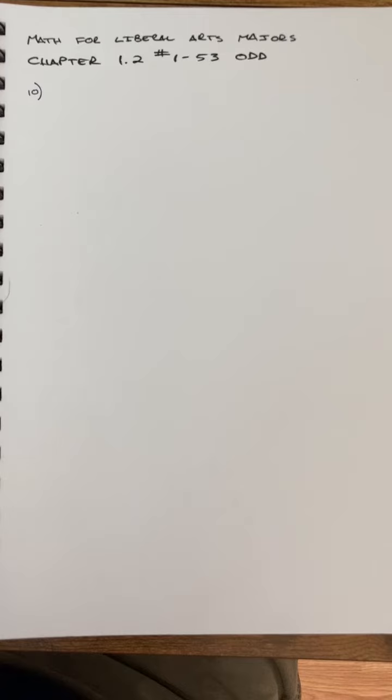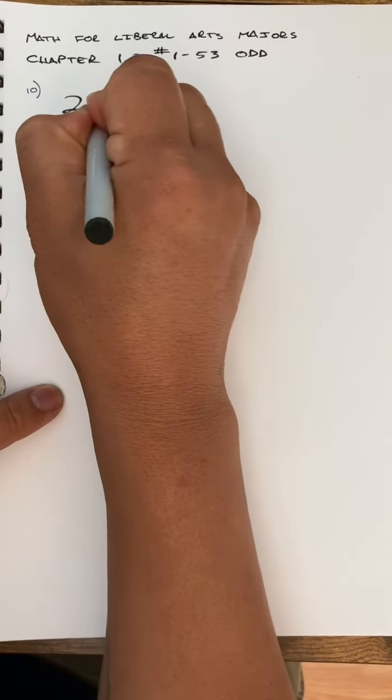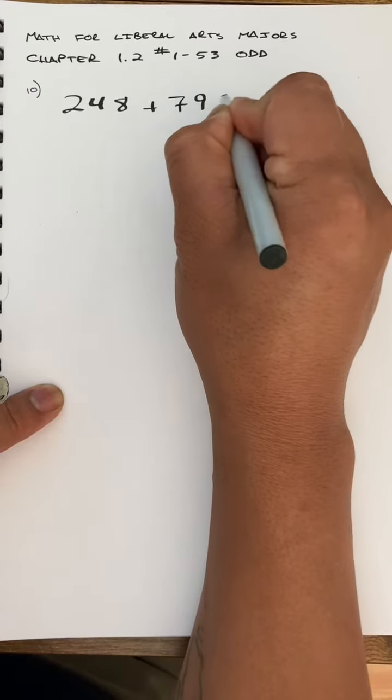And then it says after you do your estimation, check it with a calculator. All right, so here's number 10 and how it all goes. Number 10 says 248 plus 797.